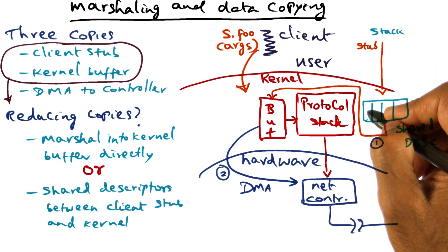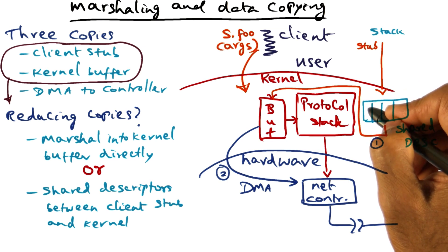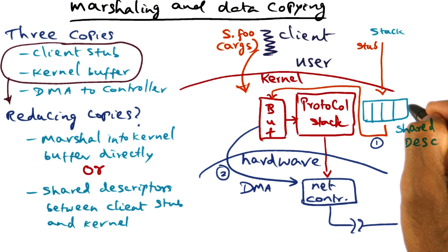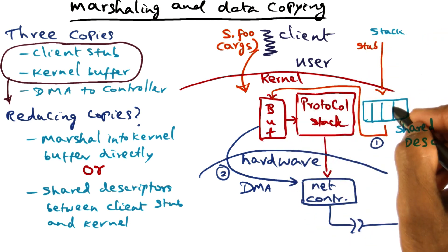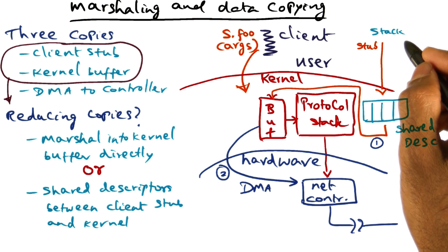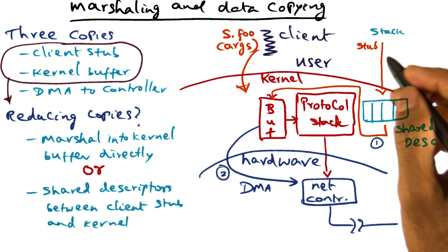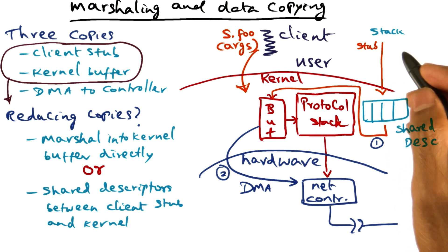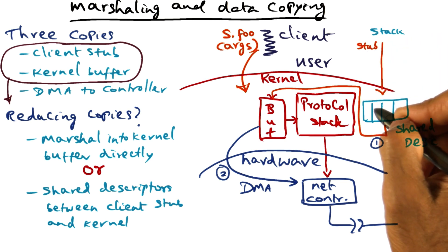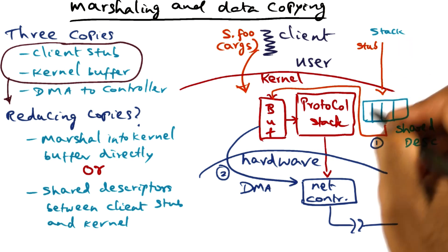All it needs to know is what is the starting address for a particular data item and what is the length of the data item. That's all it needs to know. The descriptor allows the stub to inform the kernel about the arguments — how many arguments there are and what is the size of each argument. It doesn't have to tell the kernel whether it's an integer, a floating point, or an array. All the stub is saying is: here is the starting address for an argument, and here's the length of the argument.